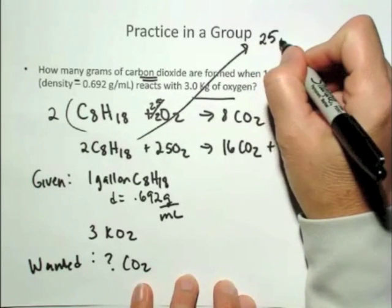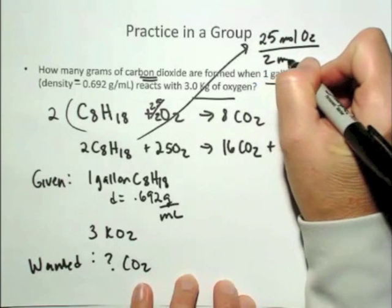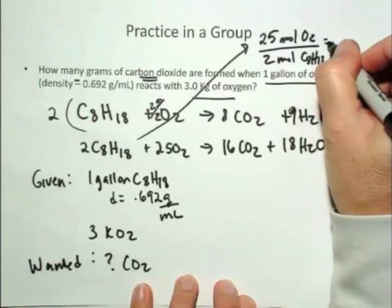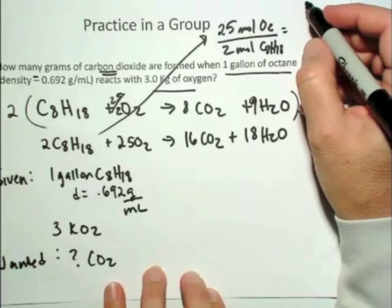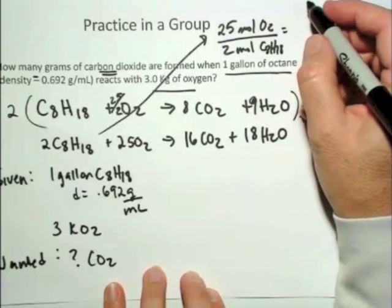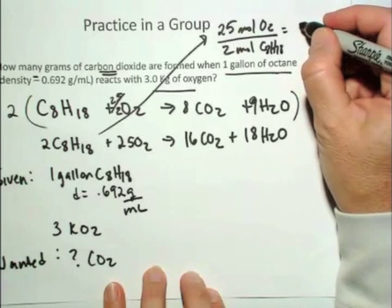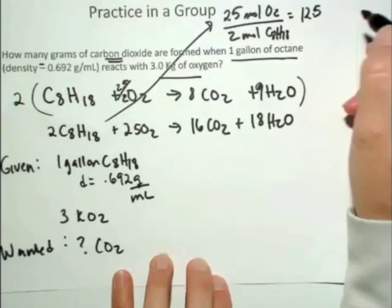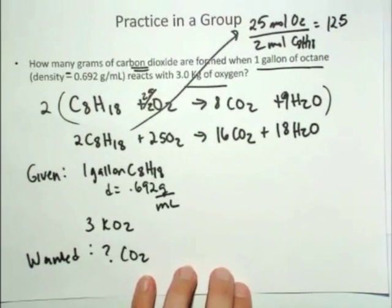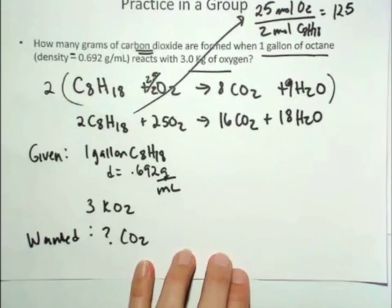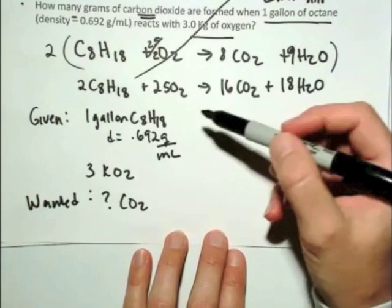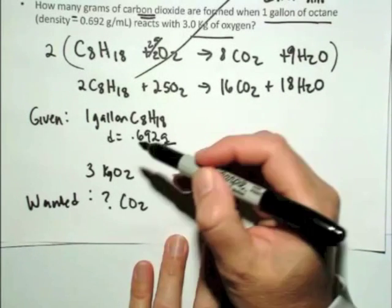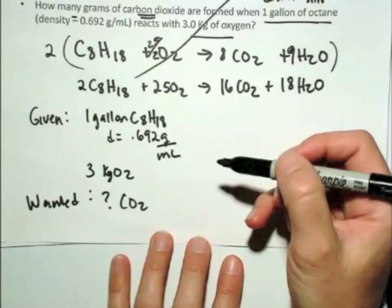To react all of it away completely we would need a 12.5 molar ratio of oxygen to octane. Alright, so we just need to figure out the number of moles of octane and the number of moles, this is kilograms, excuse me, of oxygen given.